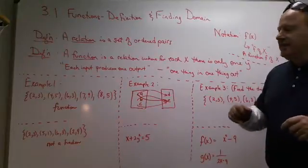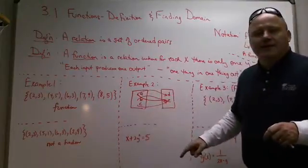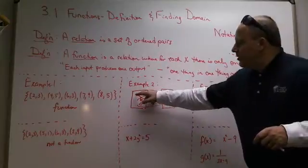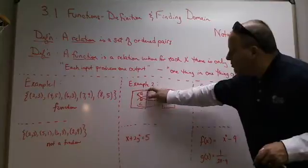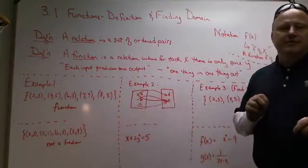So as you can see, for mapping to be a function, there can only be one arrow coming from each term. The moment you get two arrows coming from a single term, it's not a function.